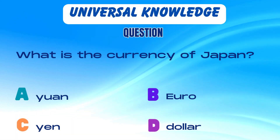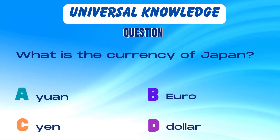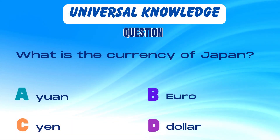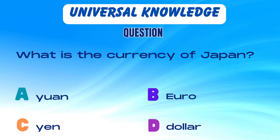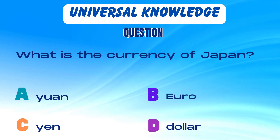What is the currency of Japan? Is it A. Yuan, B. Euro, C. Yen, or D. Dollar?